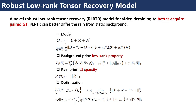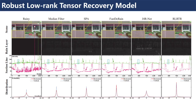We propose a robust low-rank tensor recovery model for video deraining to better acquire paired ground truth. The optimization process is listed below. We utilize the low-rank property of the background layer and the L1 sparsity of the rain layer. We provide detailed analysis to show that RLRTR can better separate rain from static background than previous methods.